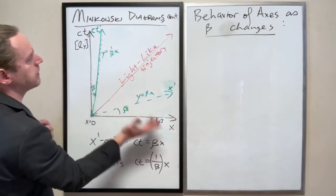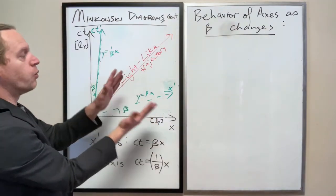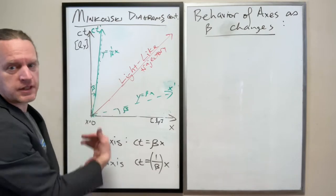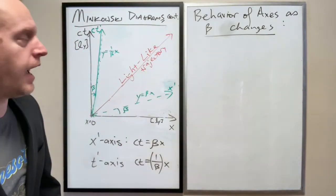As beta increases to 1, both of these become the same line, y equals x, or ct equals x, I'm sorry.